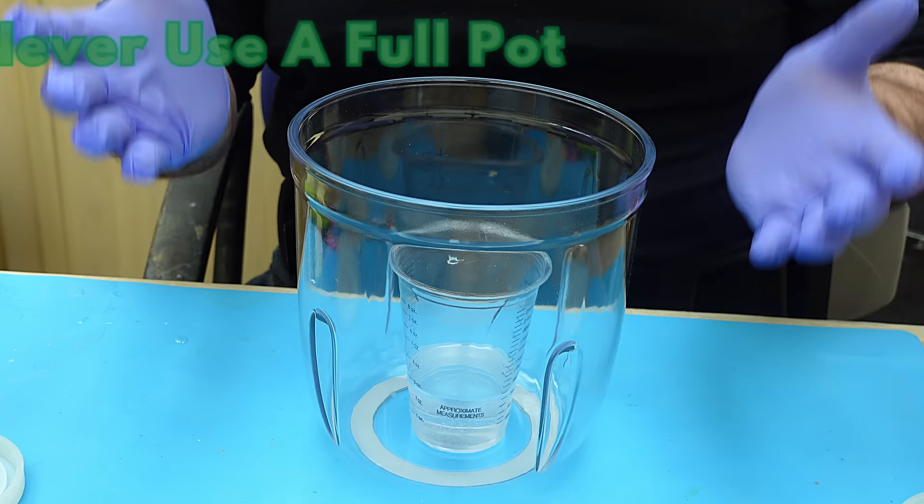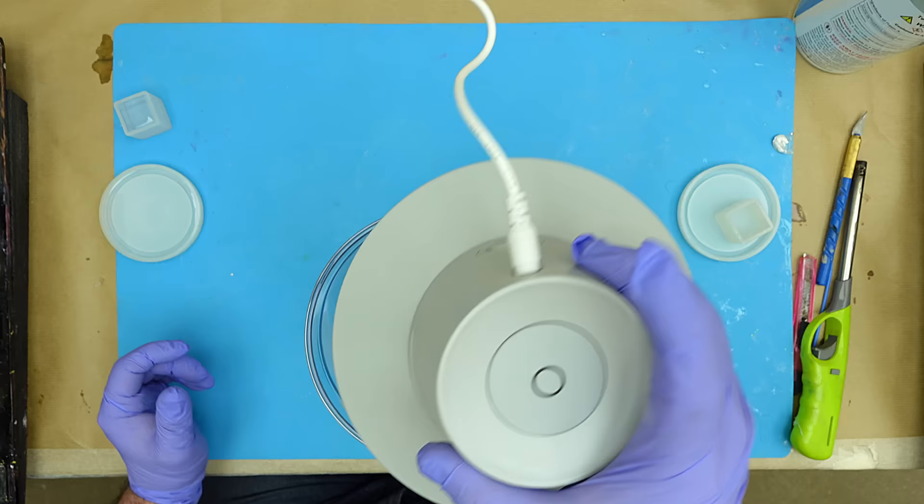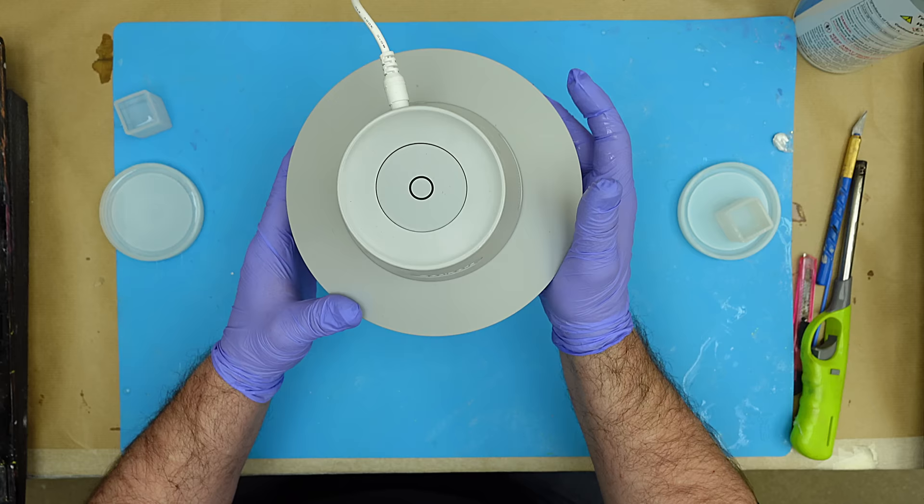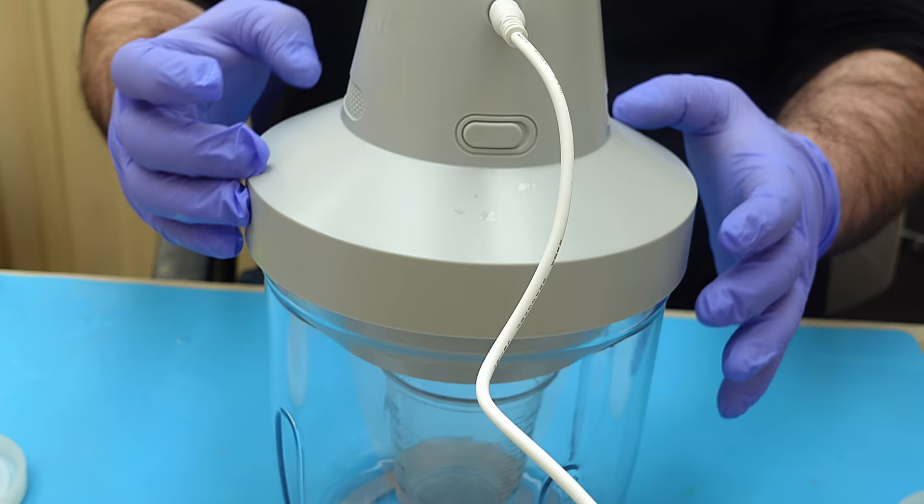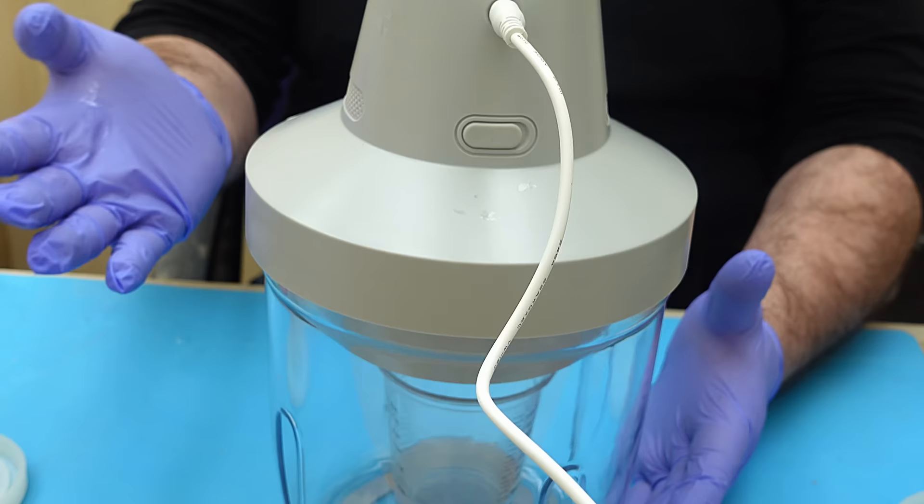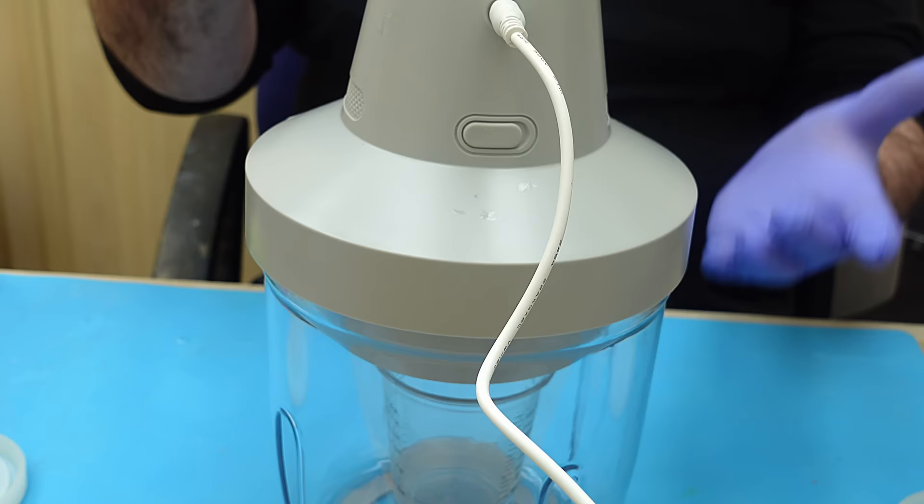Now remember never put a full pot in one of these. You only ever want to put a pot in that is half full at the most because when it froths up you don't want it to be frothing up and spilling over. All you do then is put the top on, make sure your little valve is shut, and then push the button and let it do its thing. Now this will work for 15 minutes before it will turn itself off. If you feel that your resin's already clear you can push that and it will turn it off for you.